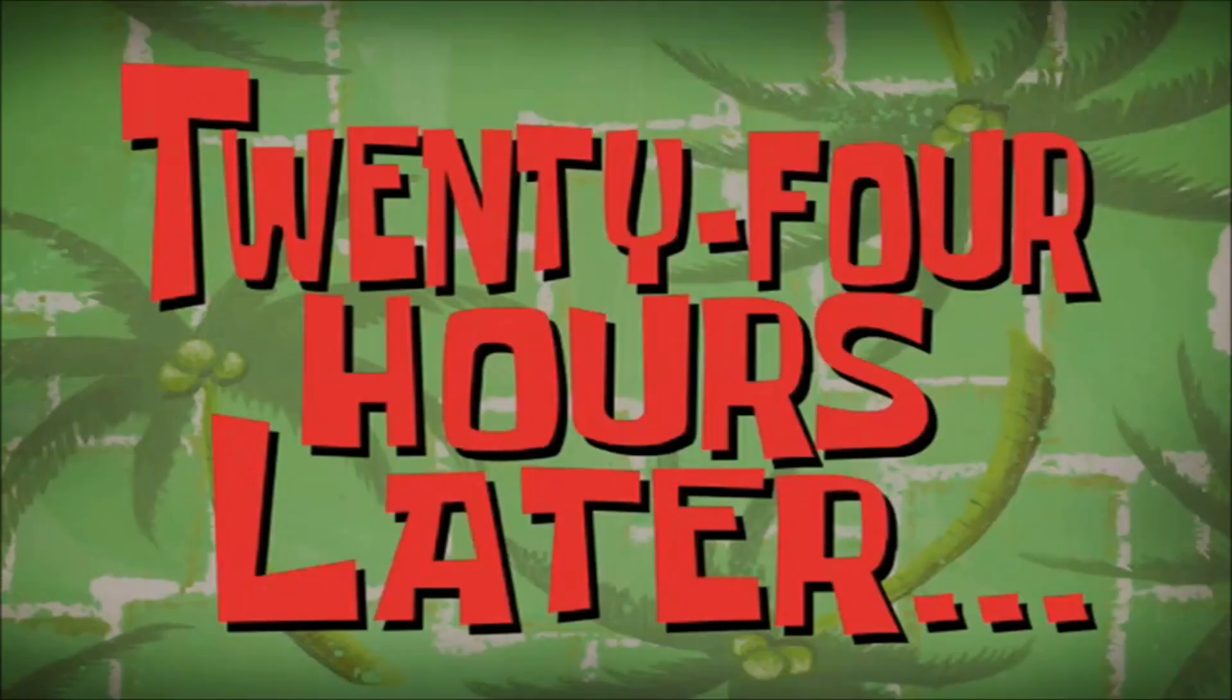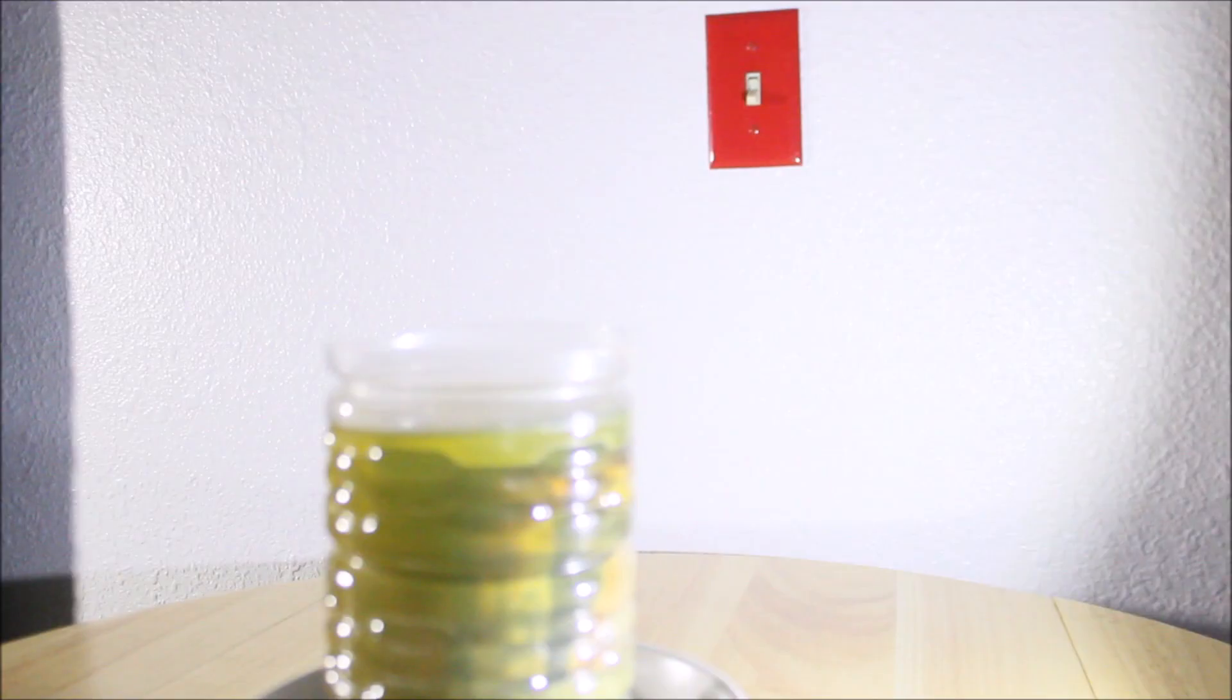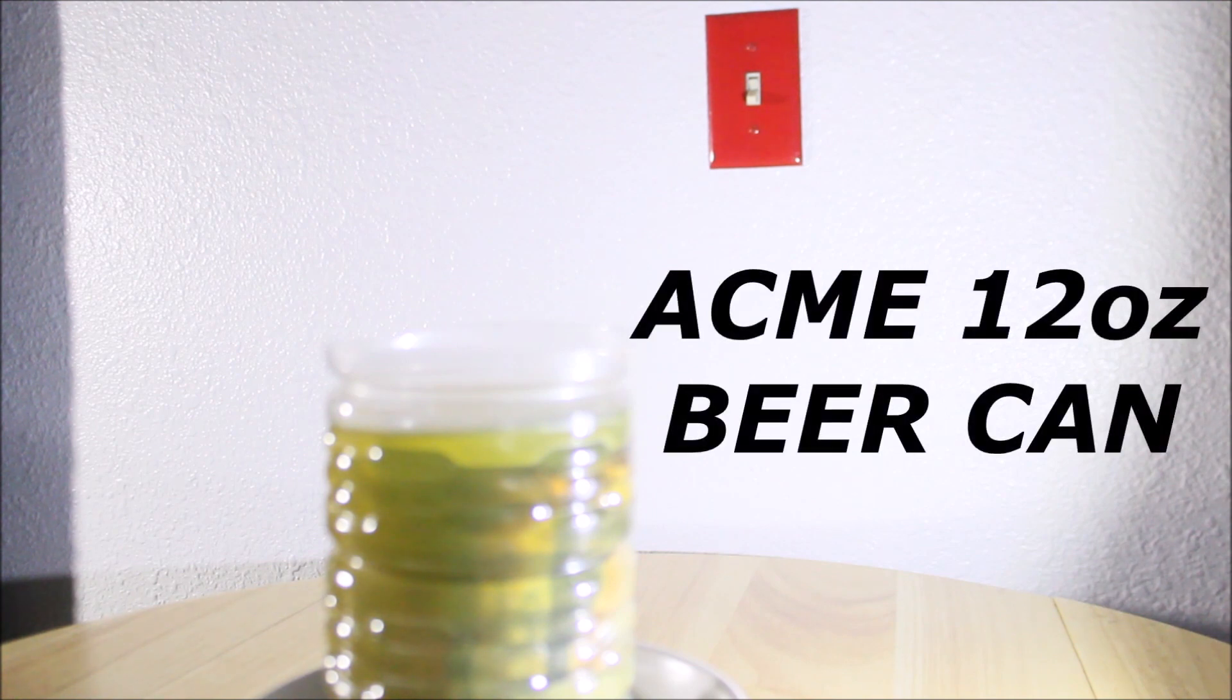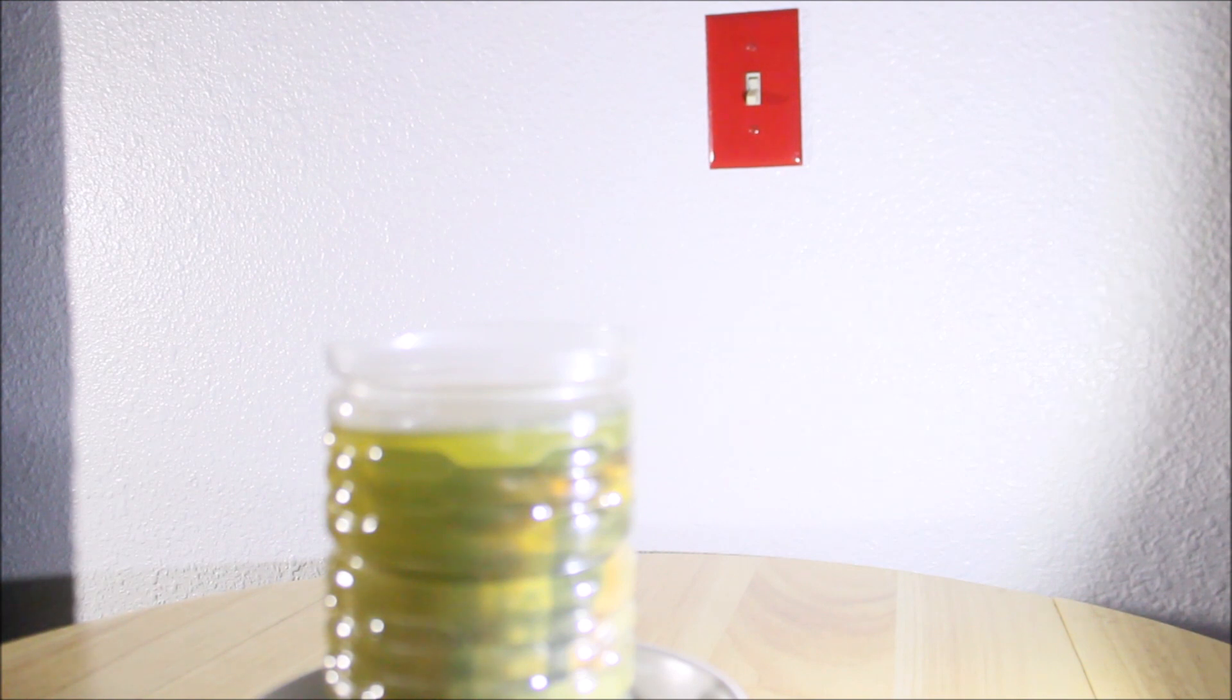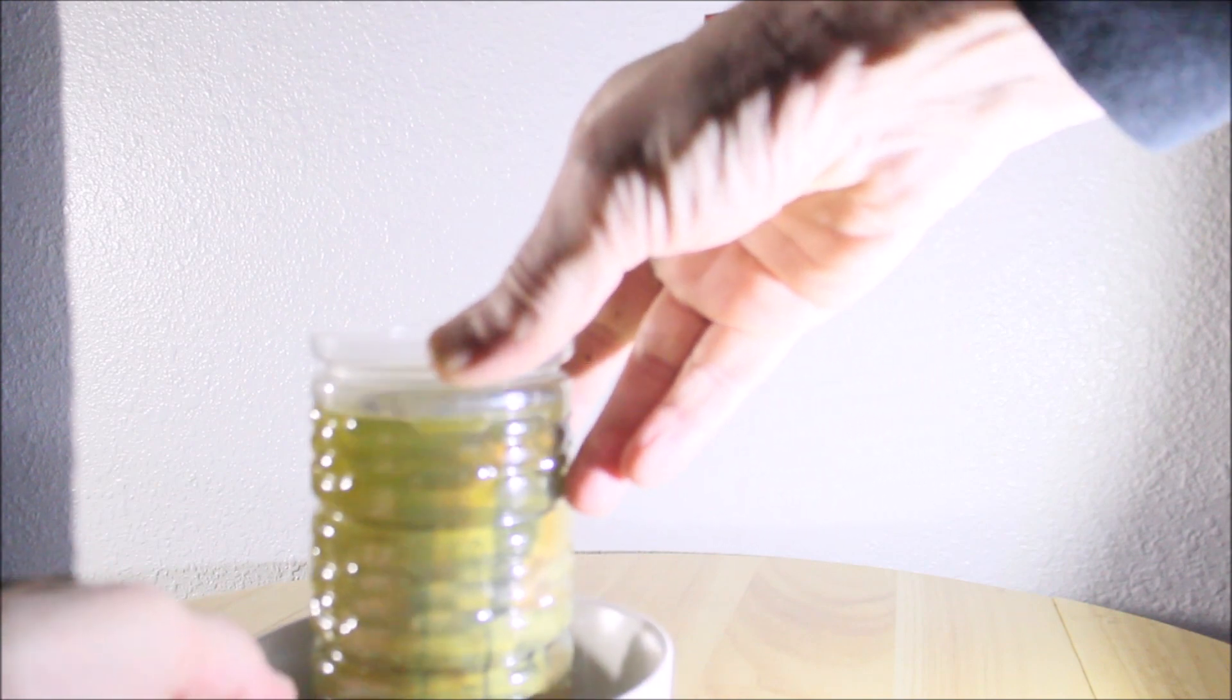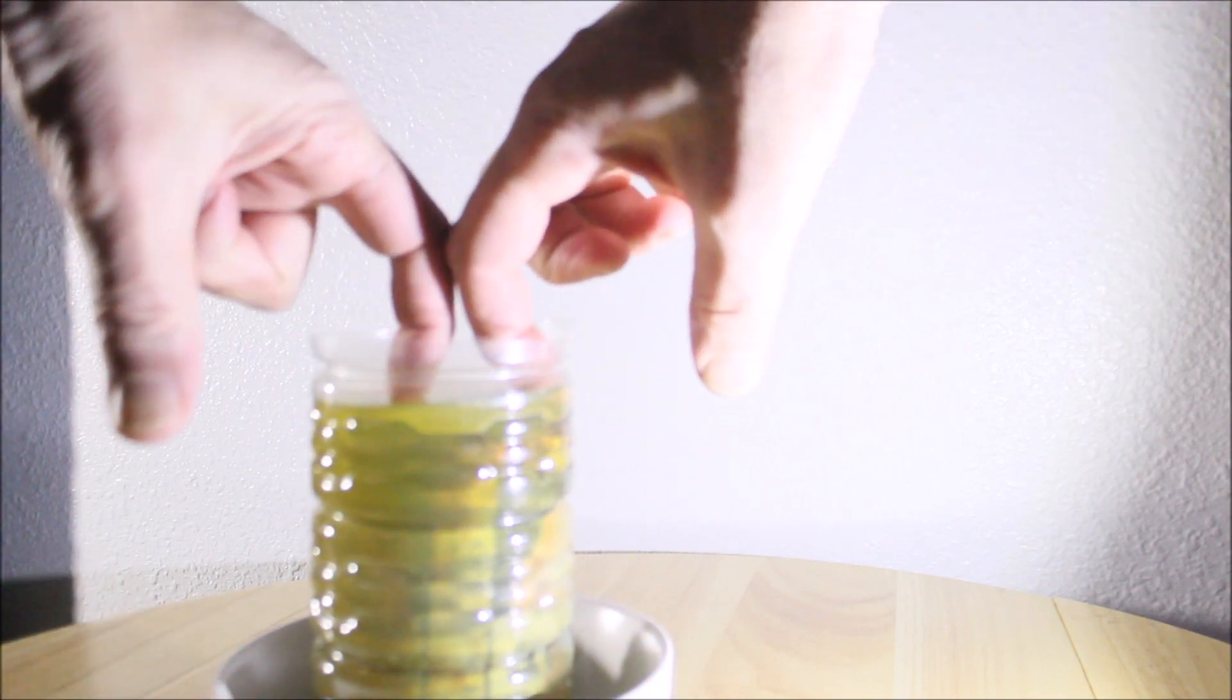24 hours later. Welcome back to today's experiment. We have a beer can that was quite rusty and we've been soaking it for about 24 hours in lemon juice. The theory is that citric acid will work away some of the rust. It was in pretty bad shape. Let's have a look.